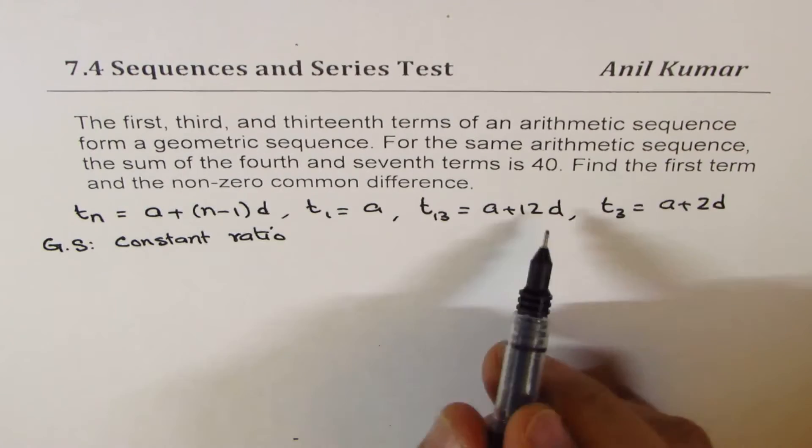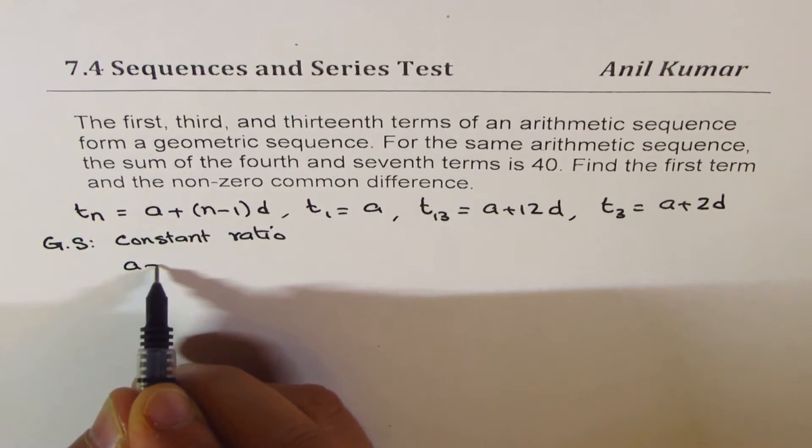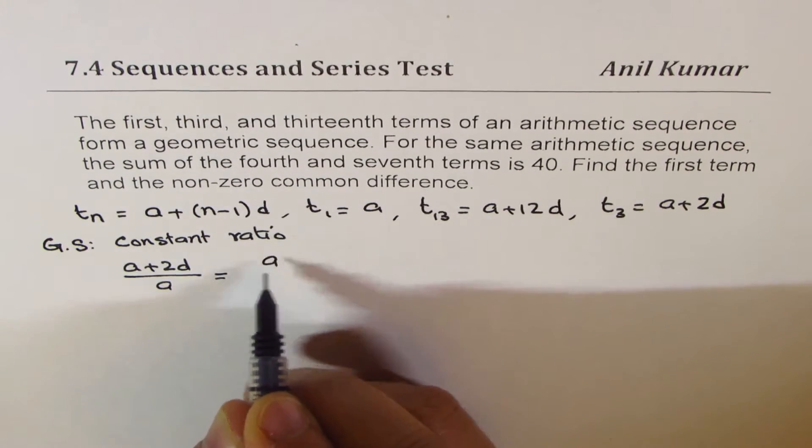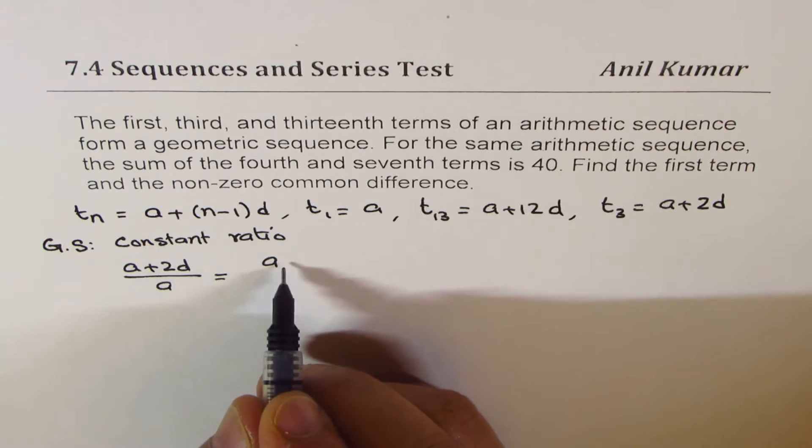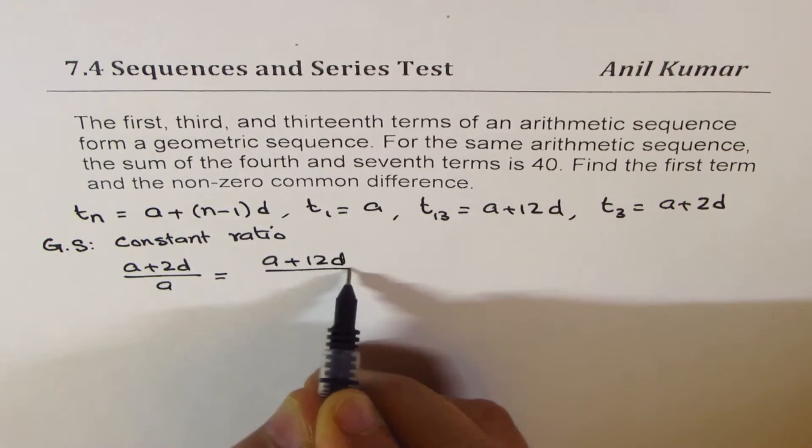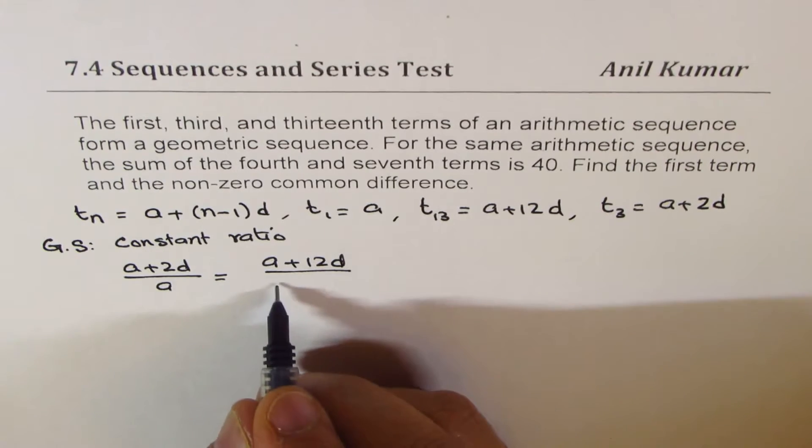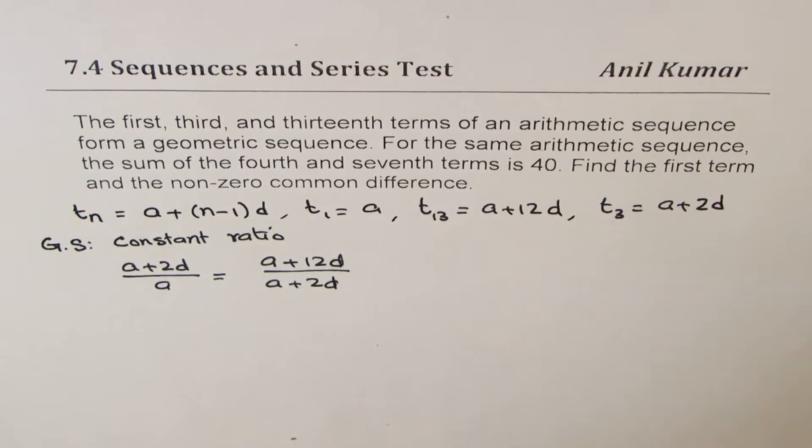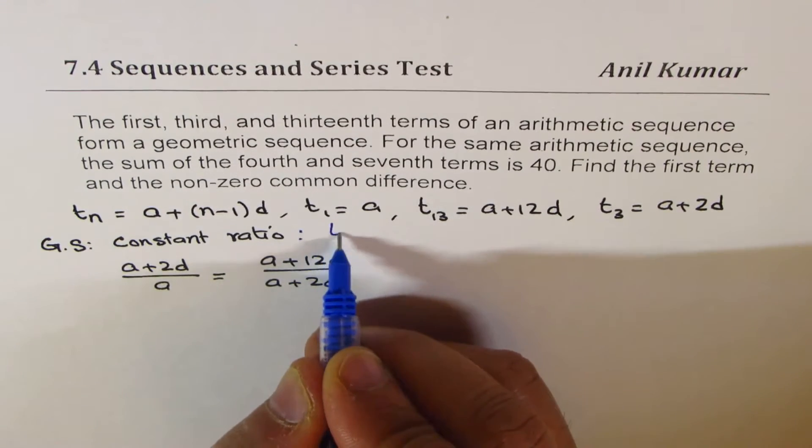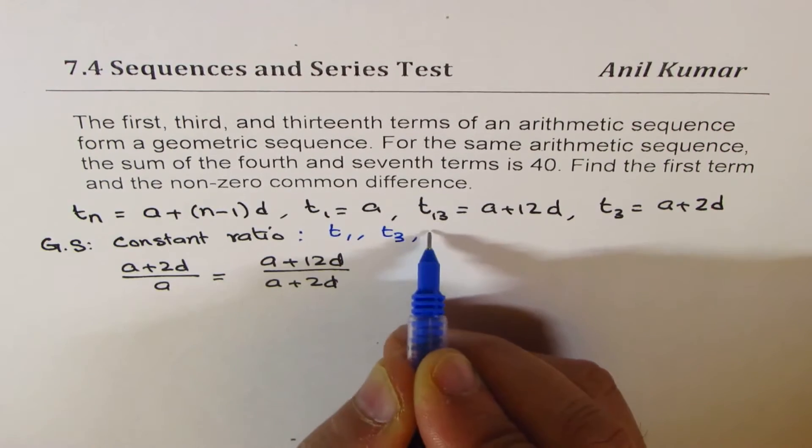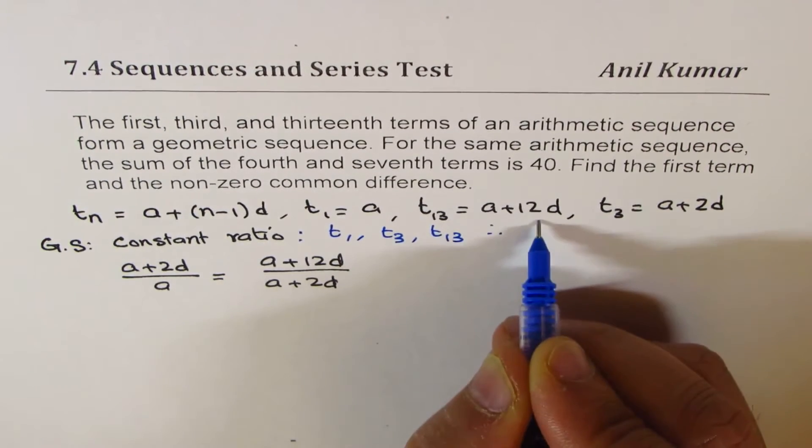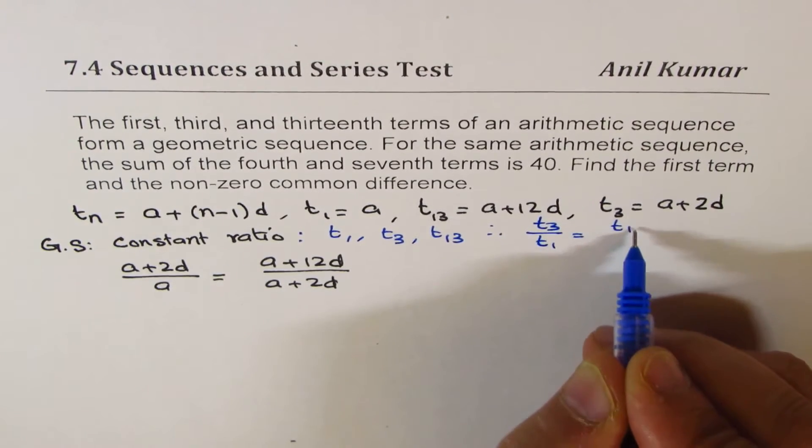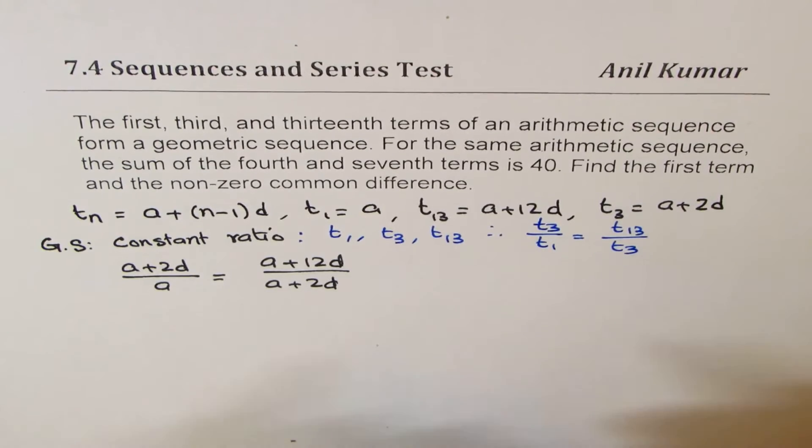So if you look into these terms, in that case the ratio (a plus 2d) divided by a should be equal to the 13th term, which is the next term in geometric sequence, which is (a plus 12d) divided by the third term which is (a plus 2d). So basically t3 over t1 should be equal to t13 over t3, correct. That is geometric sequence.